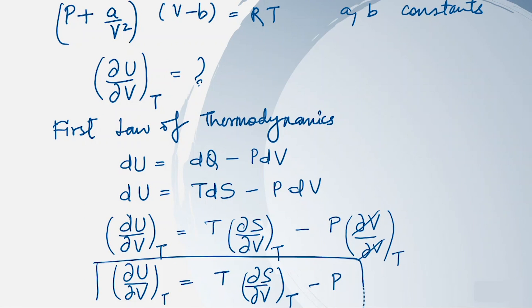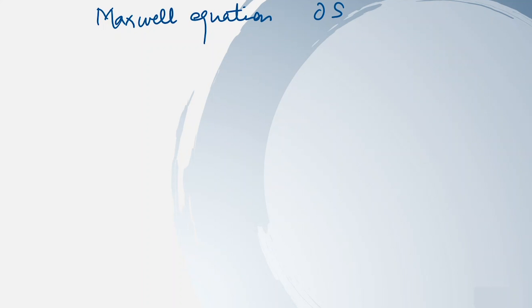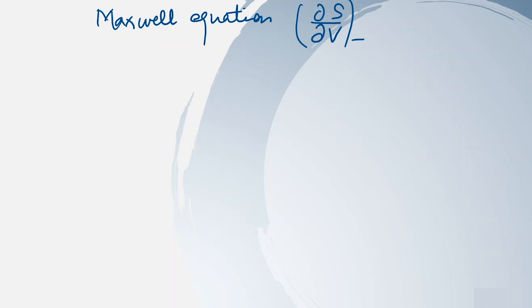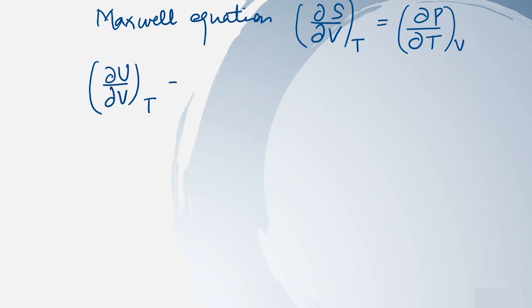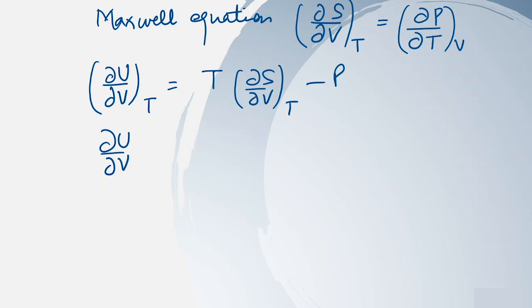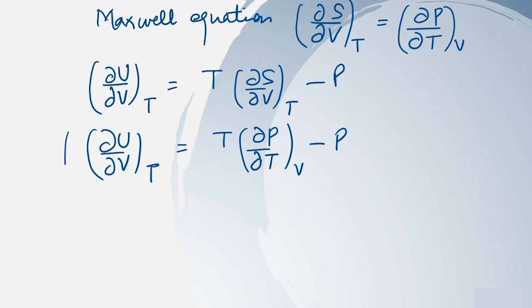We will now use the Maxwell equation to replace ∂S/∂V at constant temperature. Using the Maxwell equation in terms of P and T, we replace ∂S/∂V|T with ∂P/∂T|V. Substituting into our equation, ∂U/∂V at constant temperature becomes T(∂P/∂T)|V minus P.